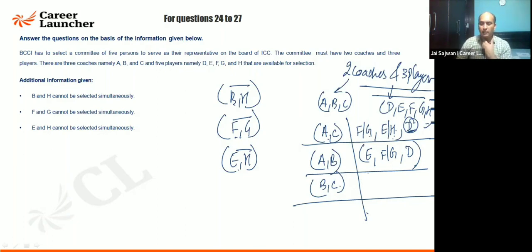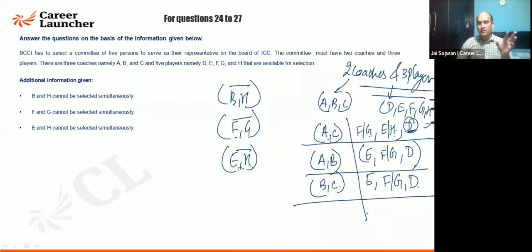If coaches B and C are coming, H will not come. So E is certainly going to come here, because B is not going to come with H, and one of E or H must come. Out of F and G, one will come, and D is certainly going to be there. So two plus four plus two gives eight total combinations.